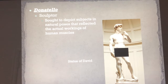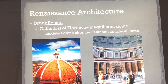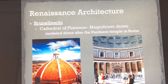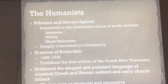Another key Renaissance element is the revitalization of architecture. The last time we saw a dome was with Hagia Sophia, which used to be an Eastern Orthodox church and is a Muslim mosque today. Now Brunelleschi creates a dome for the Cathedral of Florence, modeled after the Pantheon temple in Rome and influenced by Hagia Sophia.